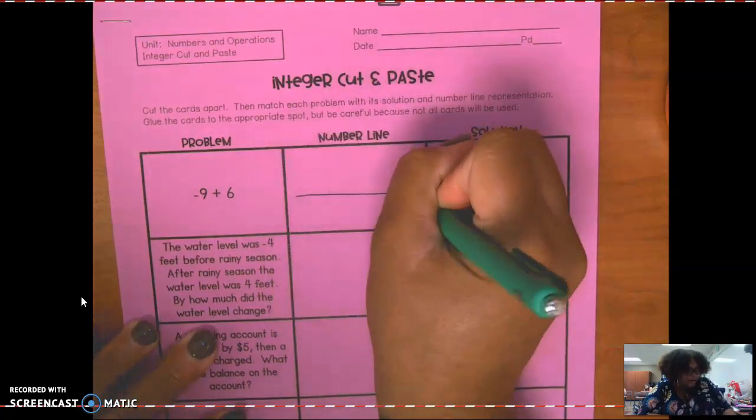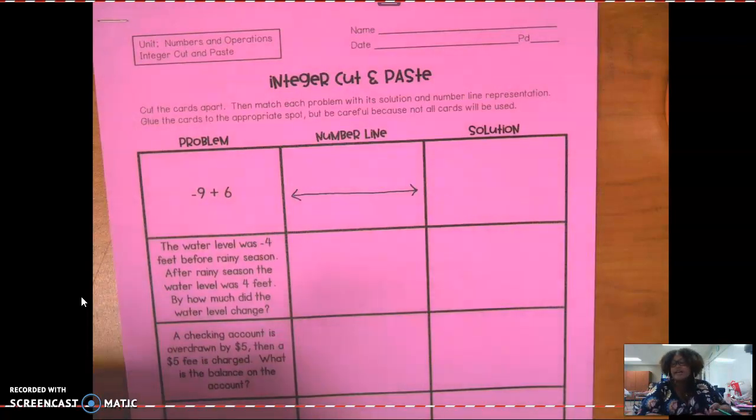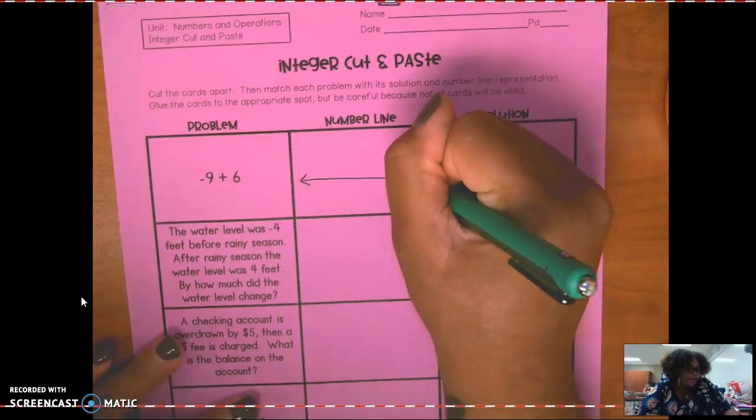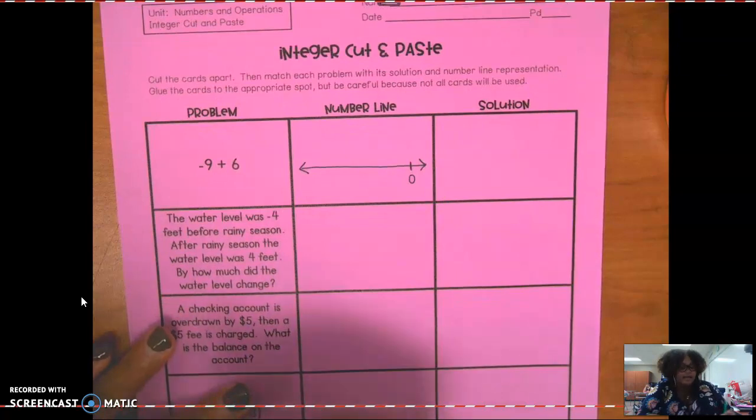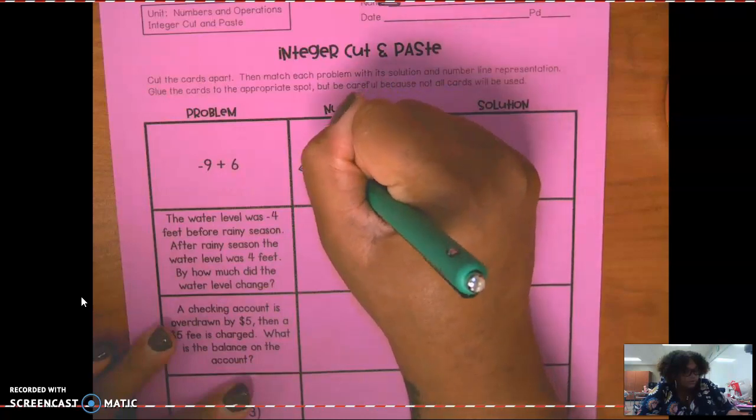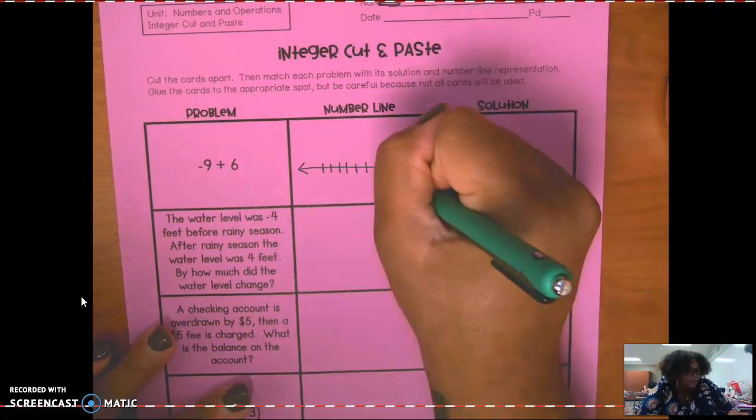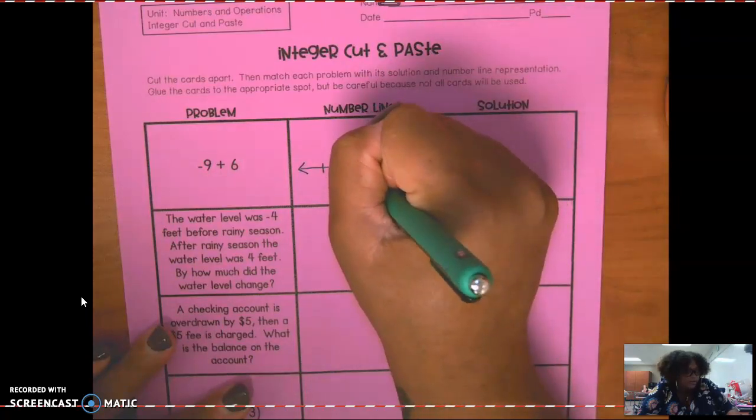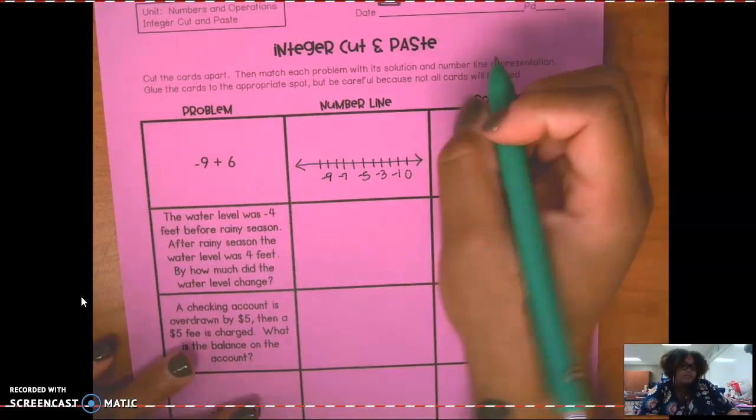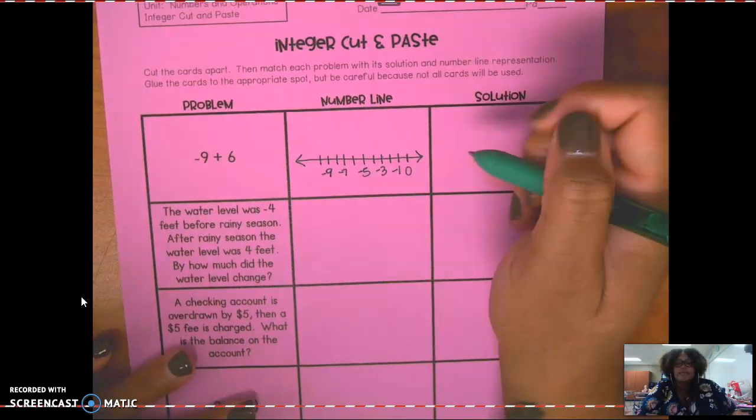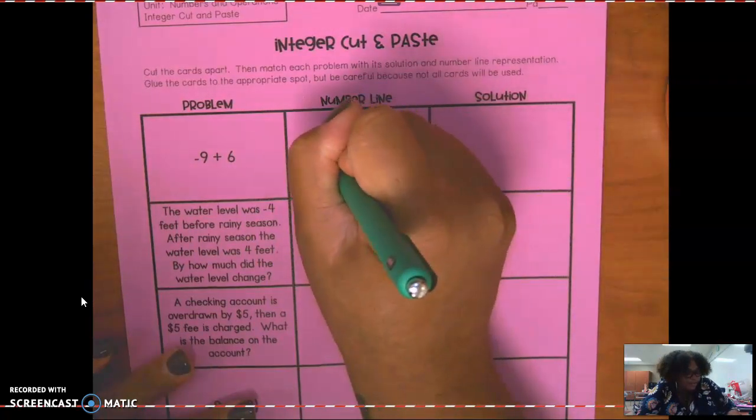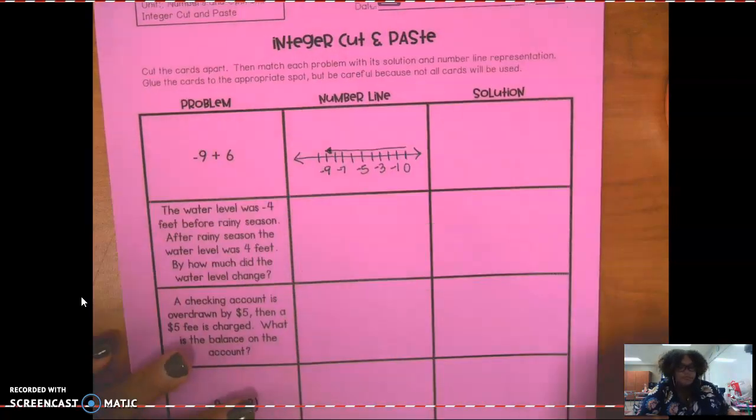So let's draw a number line here. It doesn't matter what yours looks like because it's going to get glued over anyway. And if I were you, I would start with my zero way over here to the right. Negative one, negative three, stay focused. I'm putting my odd numbers there. So like we said, we would go to the left nine spaces, draw an arrow from zero to the negative nine, just like so.